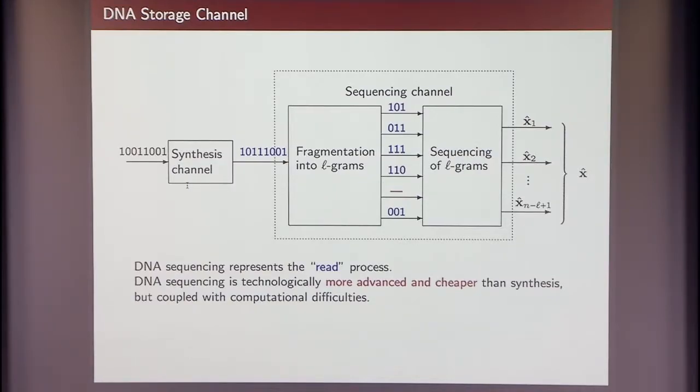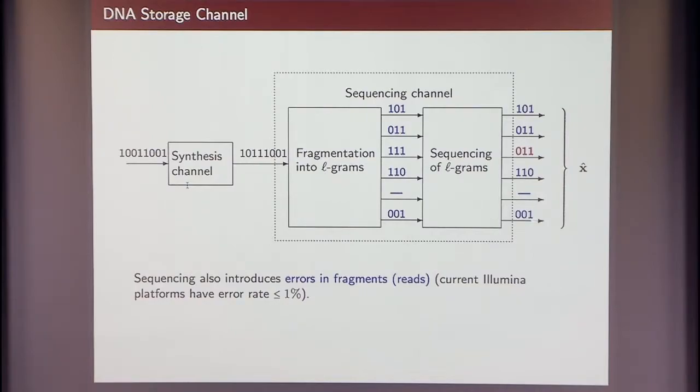And now I have to read those substrings. I have to perform actual sequencing. And what will happen is that some of these substrings themselves will get errors. So for example, I lost the substring, and here I have a substring where a 1 got converted into a 0. And this is the process of introducing errors in, let's say, Illumina machines, which have error rates about 1%. The read lengths or the L-grams are usually 100. So you can think of L as 100.